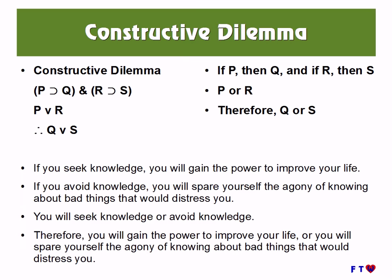Here's an example of a constructive dilemma: 'If you seek knowledge, you will gain the power to improve your life. If you avoid knowledge, you will spare yourself the agony of knowing about bad things that would distress you. You will seek knowledge or avoid knowledge. Therefore, you will gain the power to improve your life, or you will spare yourself the agony of knowing about bad things that would distress you.' Note this does not follow exactly the same form as the symbolic version — each conditional is written out separately, but by the rule of conjunction these are equivalent to their conjunction.